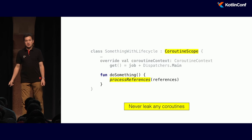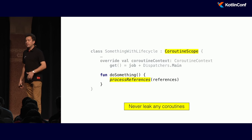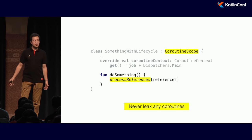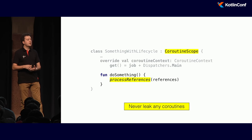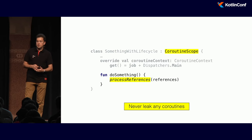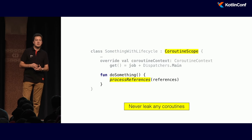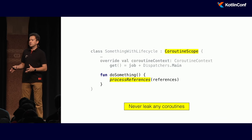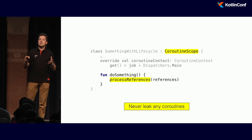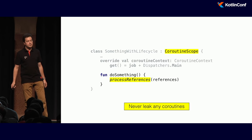This way we never leak any coroutine. When we destroy our view, shut down our application, all the background activities that were launched will get cancelled. And that's something new — something you don't get with threads. That's the way coroutines are fundamentally different from threads: the way you structure your code, you do it in a structured way.